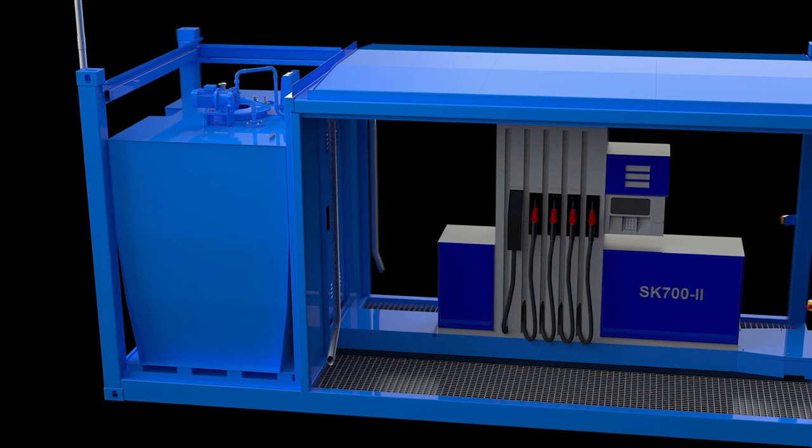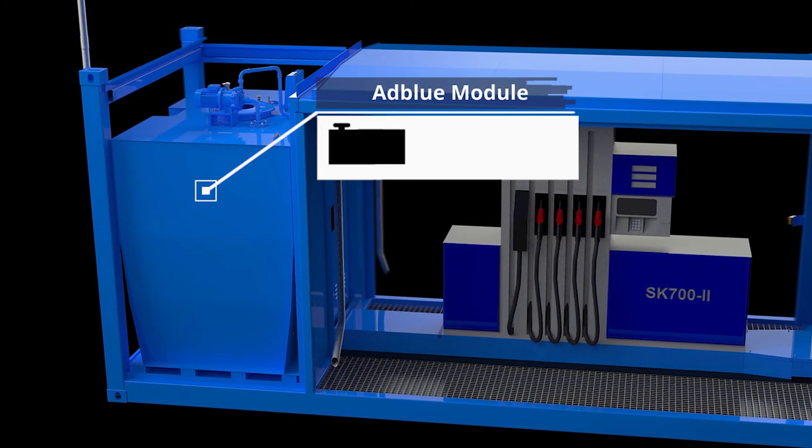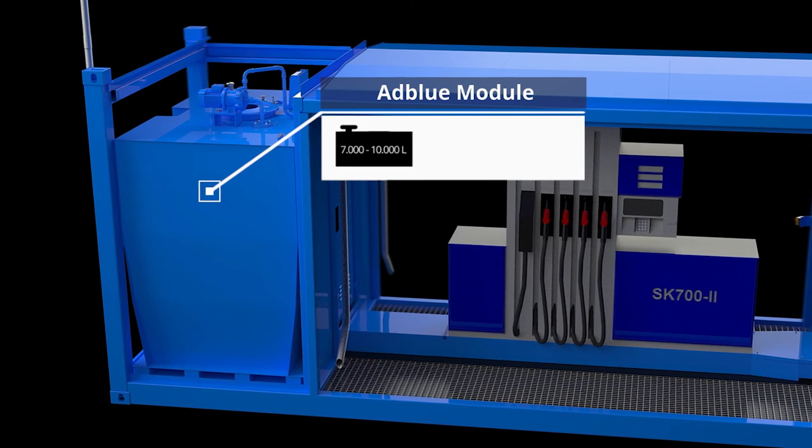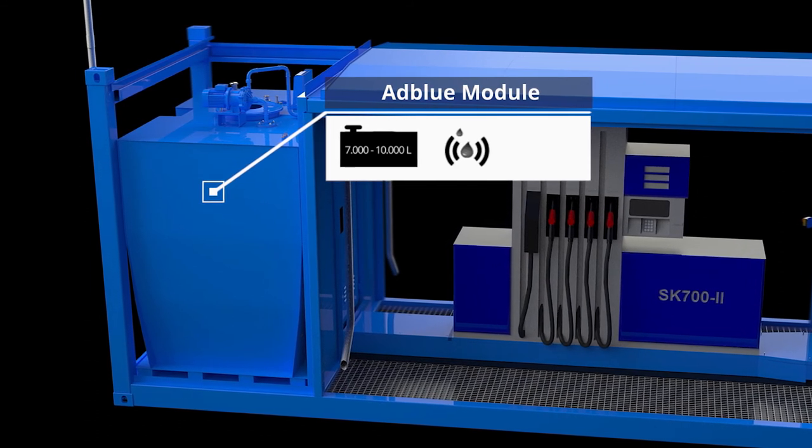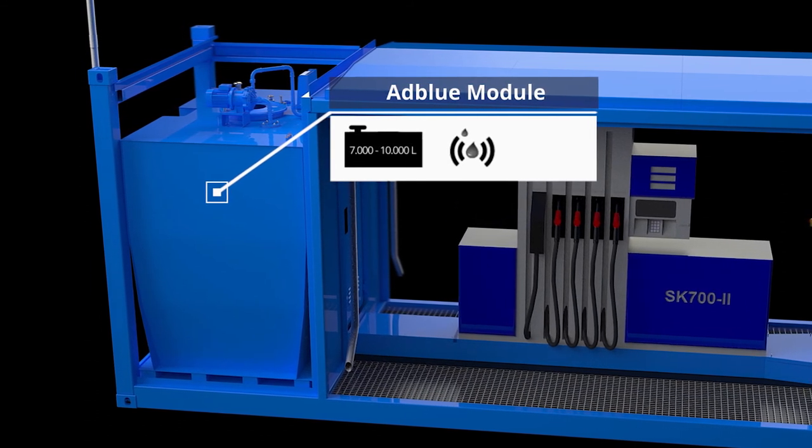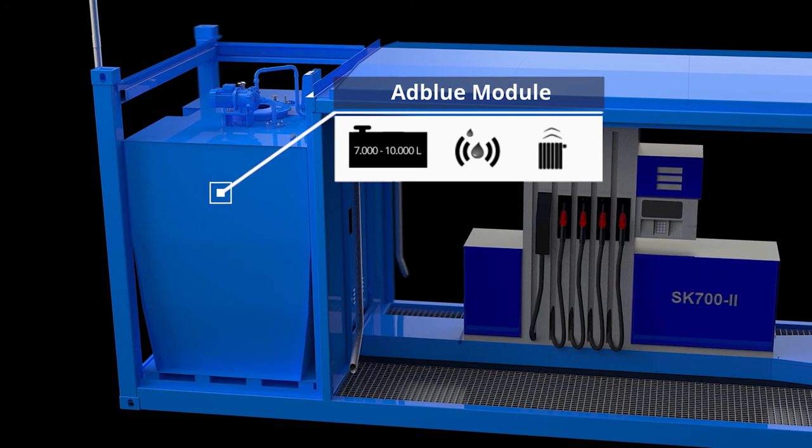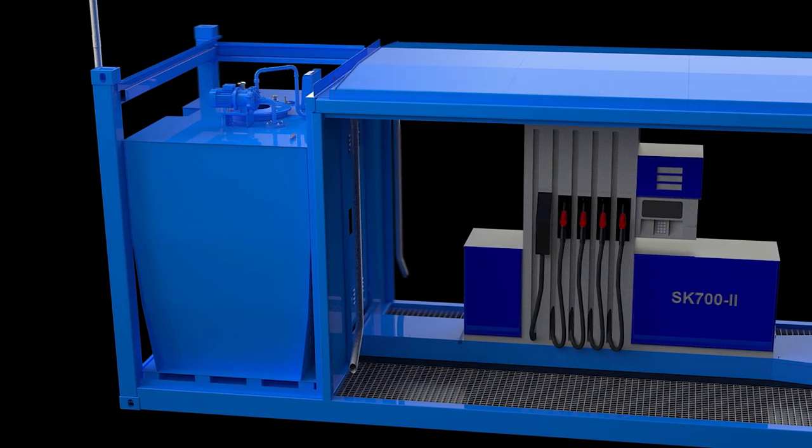For example, AdBlue module, double-walled, made of stainless steel with a volume of 7,000 to 10,000 litres, with electronic vacuum leak monitoring, tank heating, and 80 millimetres thermal insulation.